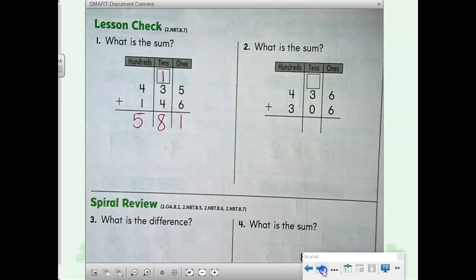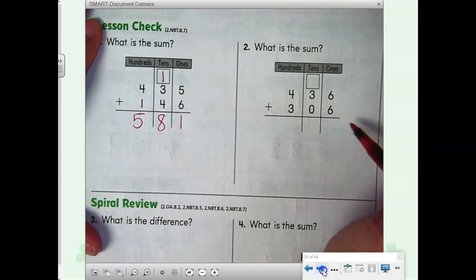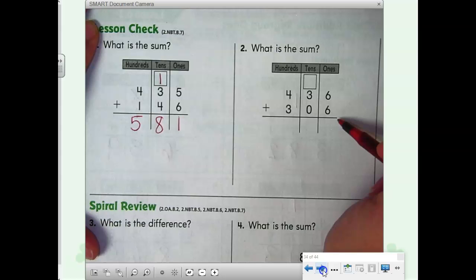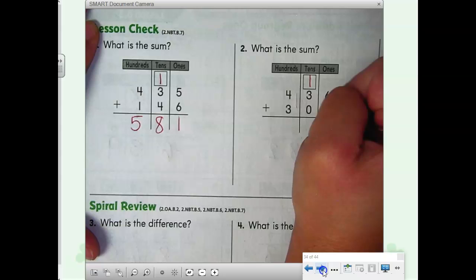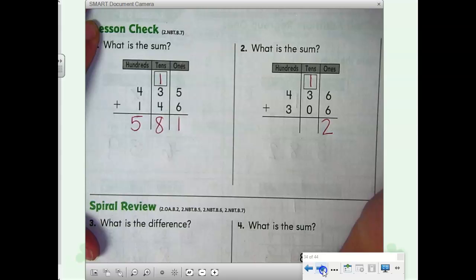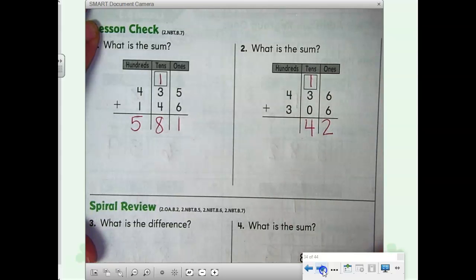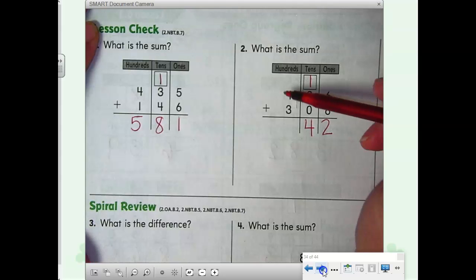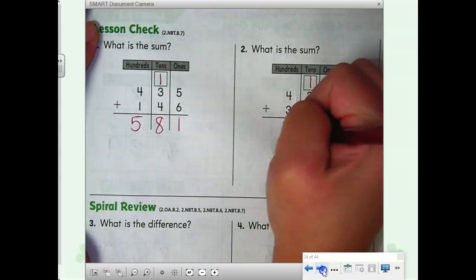Number 2. What is the sum? 436 plus 306. Start with your ones. 6 plus 6. That's the doubles fact. 12. 1 ten and 2 ones. 1 plus 3 is 4. 4 plus 0? Still 4. Write it. 4 plus 3? 7. 742.